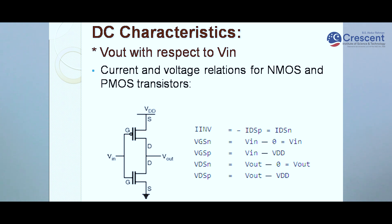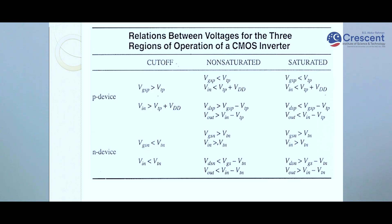V_GSN, the gate-to-source voltage of the NMOS transistor, is the difference between VIN and zero (since the source is connected to ground), so V_GSN equals VIN. V_GSP, the gate-to-source voltage of the PMOS transistor, equals VIN minus VDD. V_DSN, the drain-to-source voltage of NMOS, equals VOUT, and V_DSP for PMOS equals VOUT minus VDD.